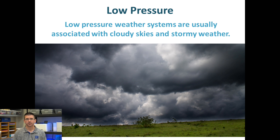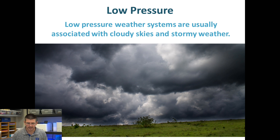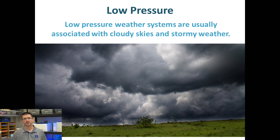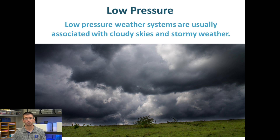Low pressure, on the other hand, means the molecules are spread apart. There's lots of room for water vapor, and often because of that, you'll have more clouds in the sky. As these clouds form and continue to get water, they get heavier and can cause rain, clouds, and storms. So lower pressure is usually associated with cloudy skies and stormy weather.